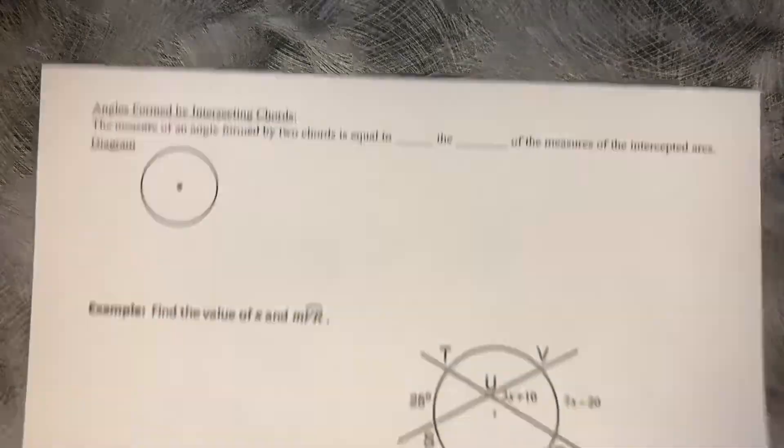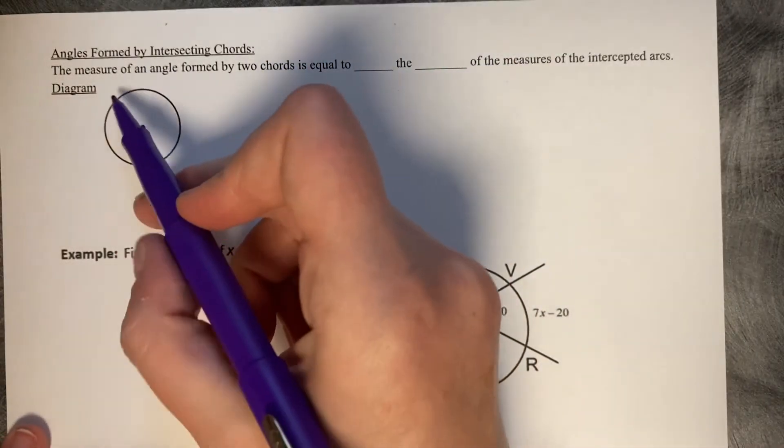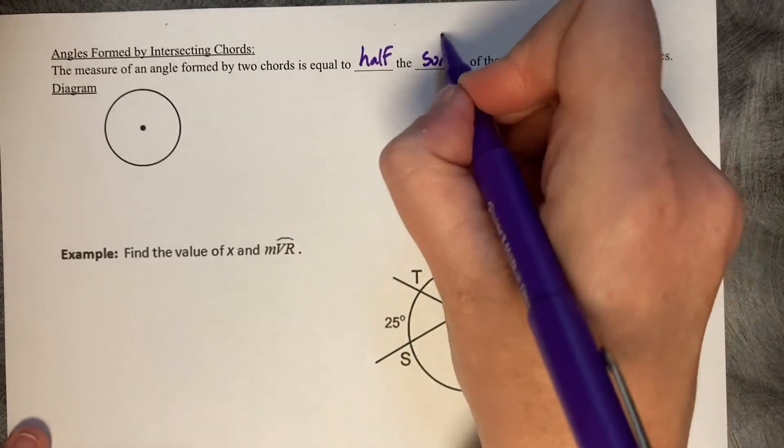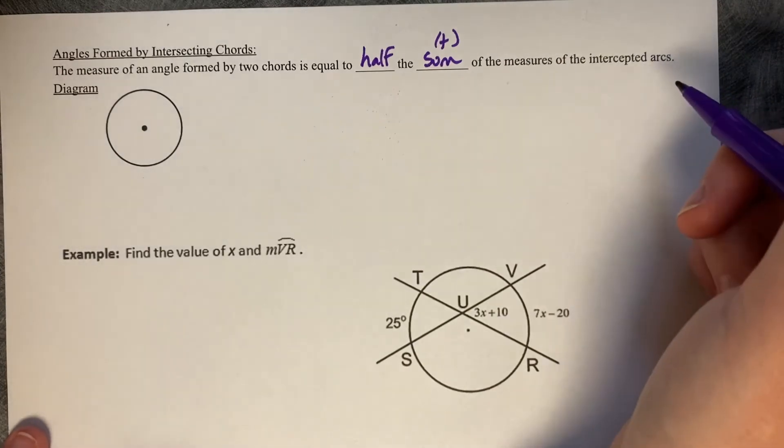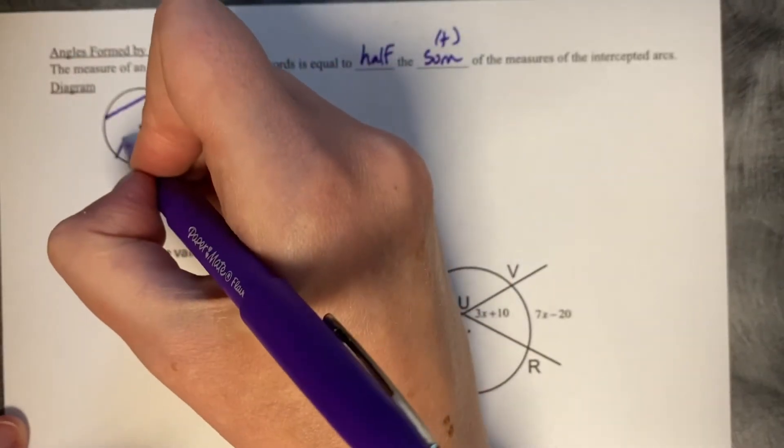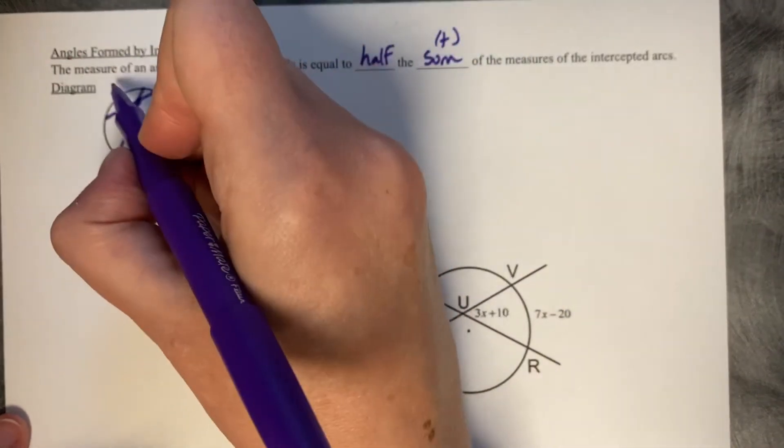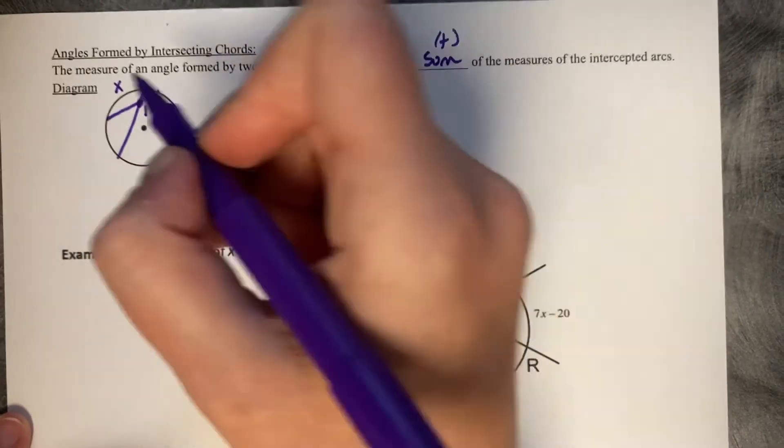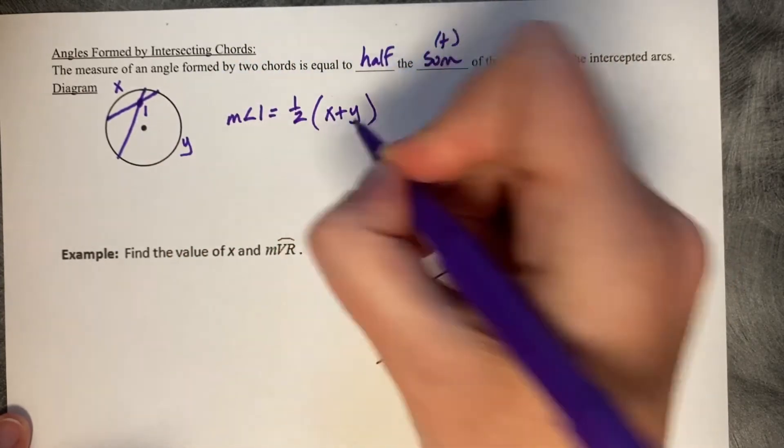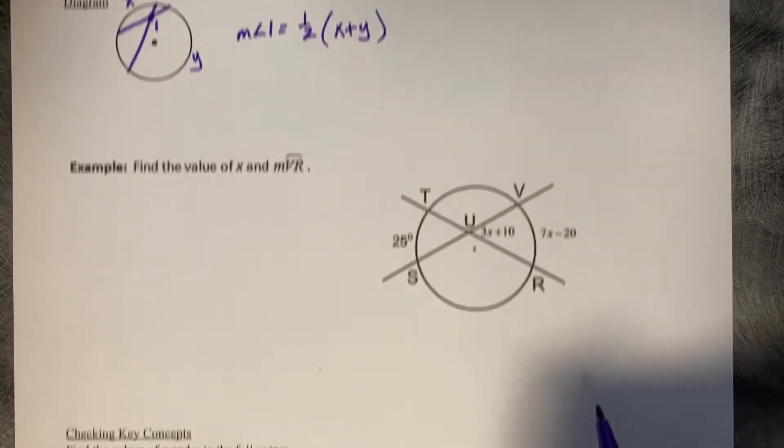Now, let's look at interior angles intersecting chords. The measure of an angle formed by two chords is equal to half the sum, the addition of the measures of the intercepted arcs. So, rather than an exterior point, if this is an interior point, this intersection is going to be half the sum of its corresponding arcs. So, if we want the measure of angle 1, we would take half X plus Y. So, half the sum of its corresponding arcs, intercepted arcs.